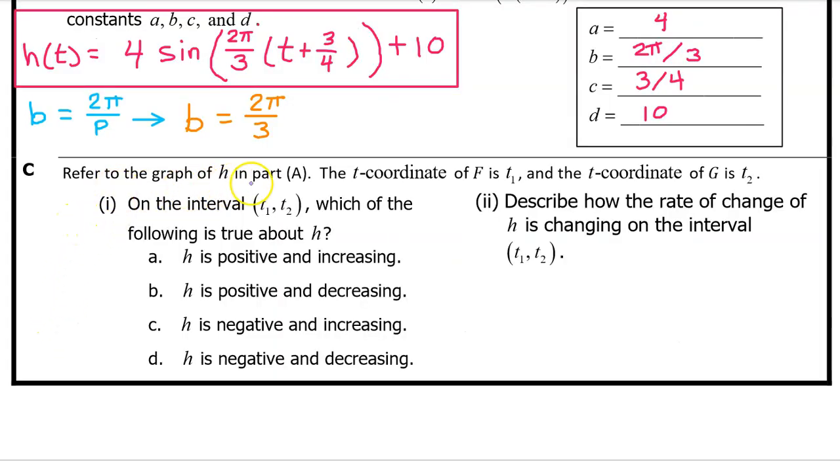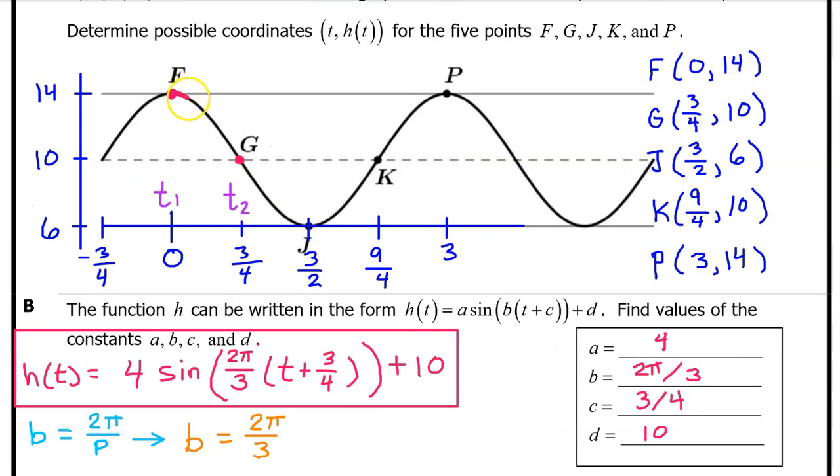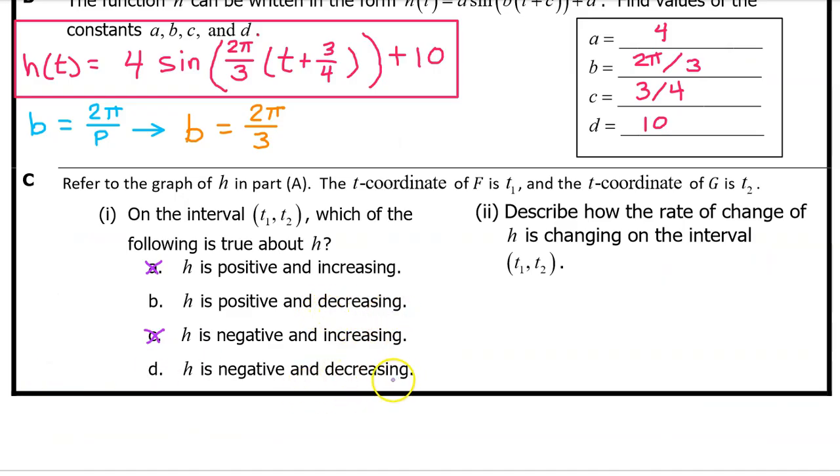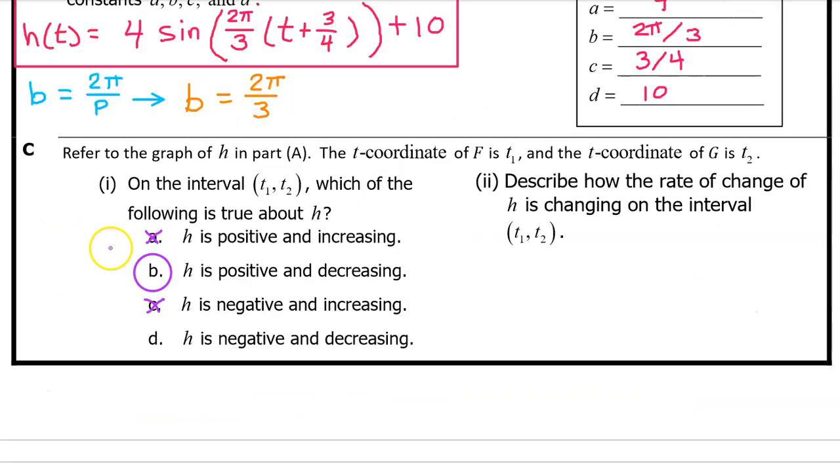Part c, refer to the graph of h in part a. The t coordinate of f is t1 and the t coordinate of g is t2. So here is t1 and here's t2. See part 1. On the interval from t1 to t2, which of the following is true about h? Is h positive and increasing, positive and decreasing, negative and increasing, or negative and decreasing? H is clearly decreasing on this interval. The graph of h is falling as we move from left to right from t1 to t2. We have narrowed it down to either b or d. But is h positive or negative on this interval? h of t has a minimum value of 6. So h of t is always positive. So the answer is b. h is positive and decreasing on this interval.